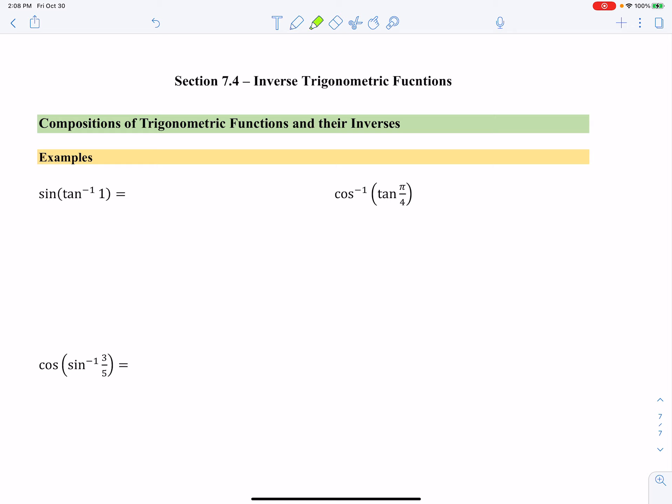So this first one, we want the sine of the inverse tangent of 1. So I need to worry about the inverse tangent of 1 first. Now, I know that that is 45 degrees. So that means we are just trying to find the sine of 45 degrees, which we know is root 2 over 2. And there we go. We have accomplished the first one.